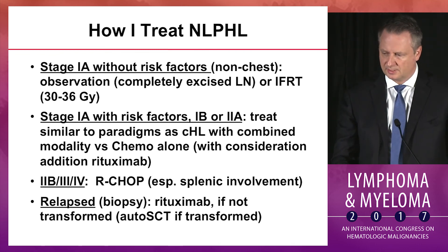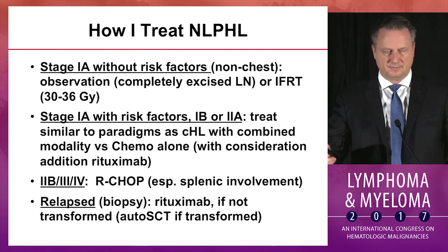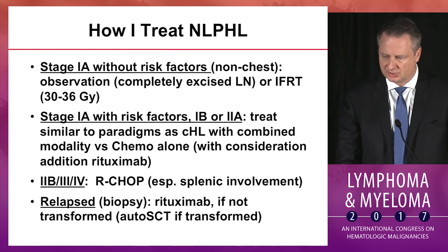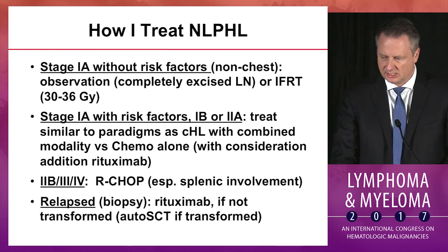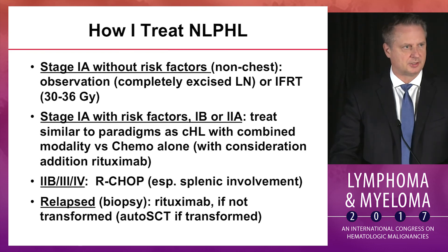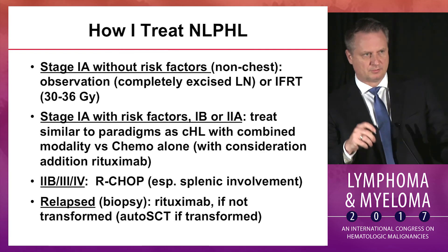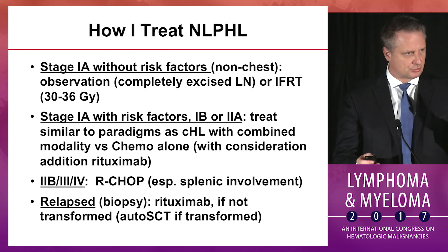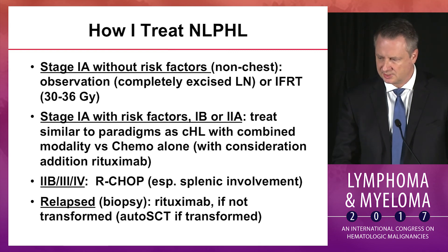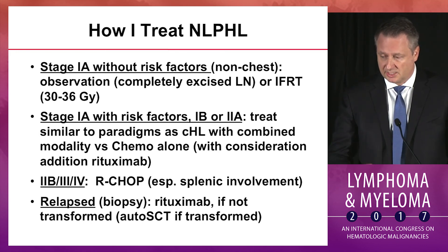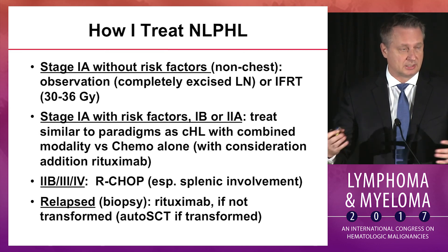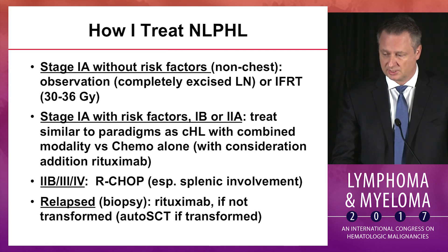For early-stage patients — whether giving combined modality or chemotherapy alone — ABVD or R-CHOP is an option. I would more commonly include rituximab even without randomized data. Since the MD Anderson R-CHOP publication, I am thinking more about R-CHOP as frontline treatment, especially if there is splenic involvement. For completely asymptomatic relapse, really think about observation. Rituximab can yield close to 100% remission rate, and some patients will go a decade or more.